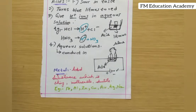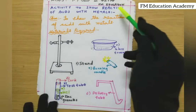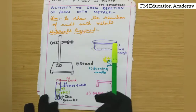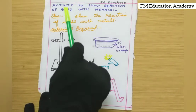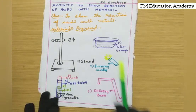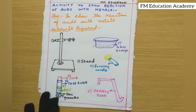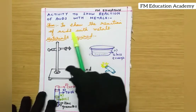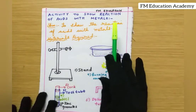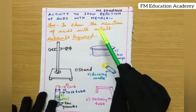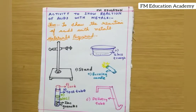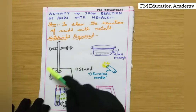Our activity is to demonstrate the reaction of acids with metals. An acid is a substance with the physical properties we discussed, and a metal is a hard, shiny, solid substance. The aim is to show what products form when acid and metal react. This activity is in the CBSE as well as SSC curriculum for Class 10, in the chapter Acids, Bases and Salts.